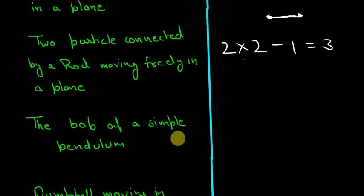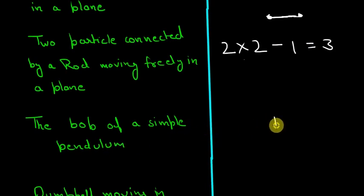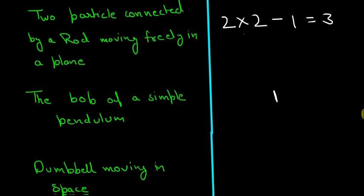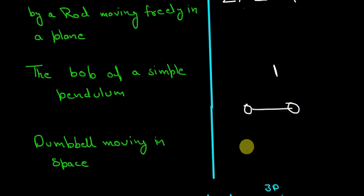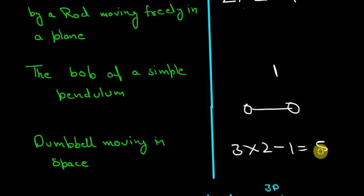The bob of a simple pendulum is really similar to a particle moving on the circumference of a circle, so its degree of freedom is one — we only need theta to specify its position. For a dumbbell moving in space, there are two particles in three-dimensional space minus one restriction, giving five degrees of freedom.